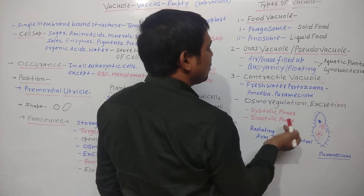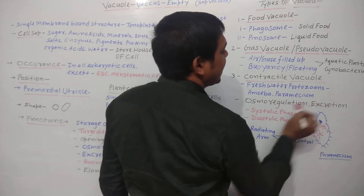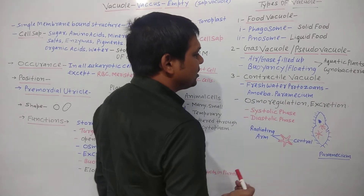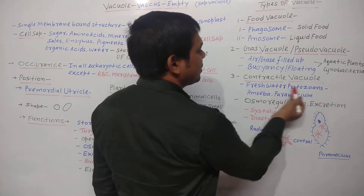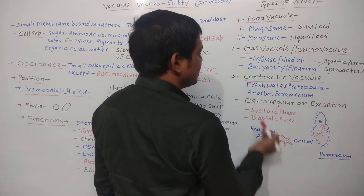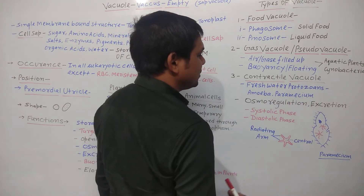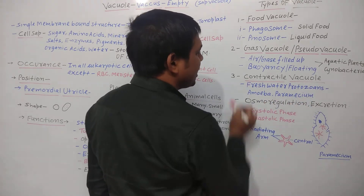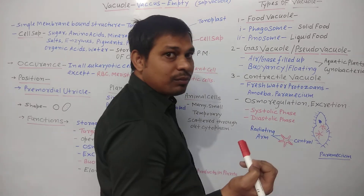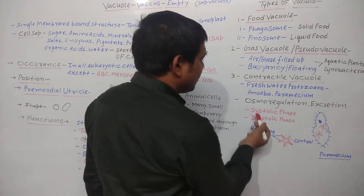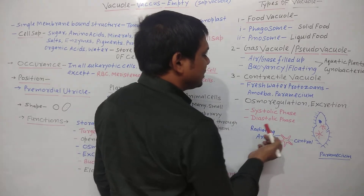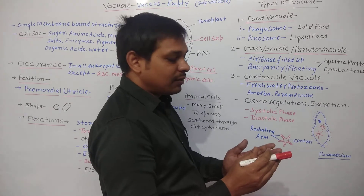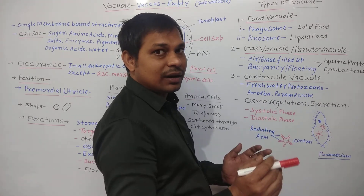So contractile vacuoles help in osmoregulation and excretion, and they are generally present in fresh water protozoans like amoeba and paramecium. Contractile vacuoles exist in two forms: the systolic phase, when the contractile vacuole is in a contracted condition, and the diastolic phase, when the contractile vacuole is in a relaxed condition.